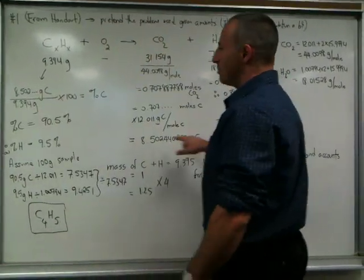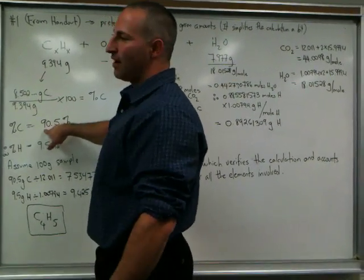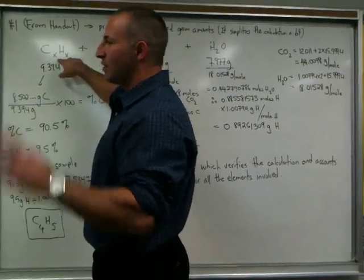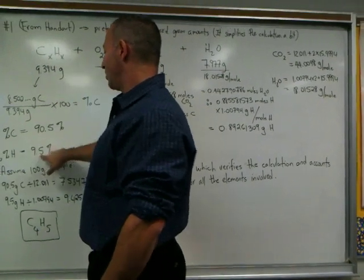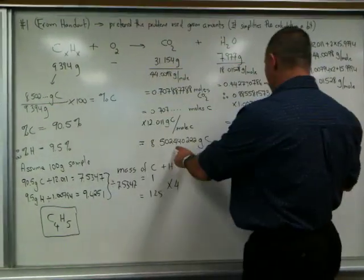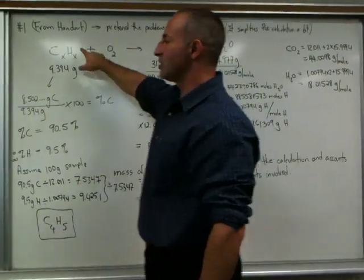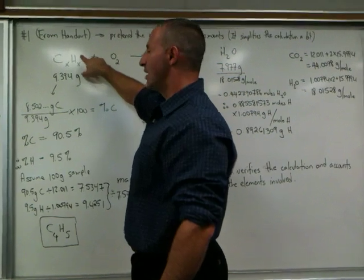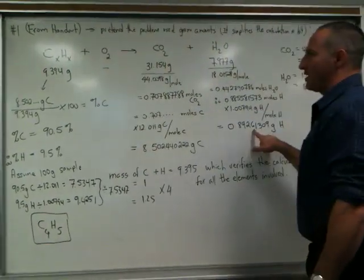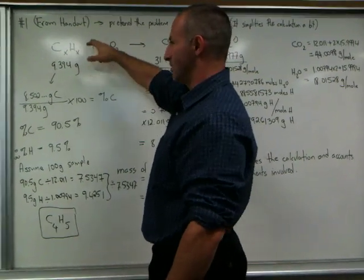8.502 grams of carbon in a 9.394 gram sample means that you have 90.5% carbon in this unknown compound. And that means that you also have 9.5% hydrogen. If all the weight is accounted for in these two quantities then that means there's no other elements in the original molecule. If there had been oxygen in there then these two numbers would not have added up to that total. And that would have tipped me off if there was something else in the molecule. But in this case it's only carbon and hydrogen.